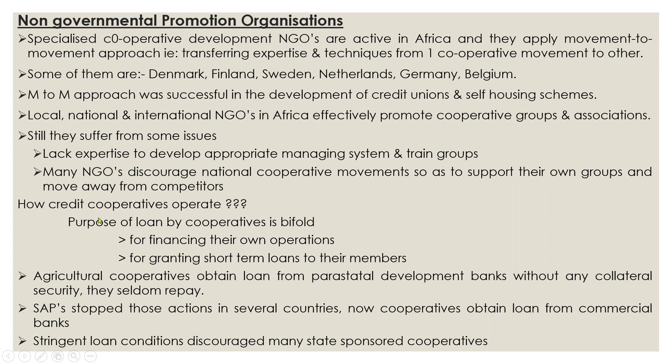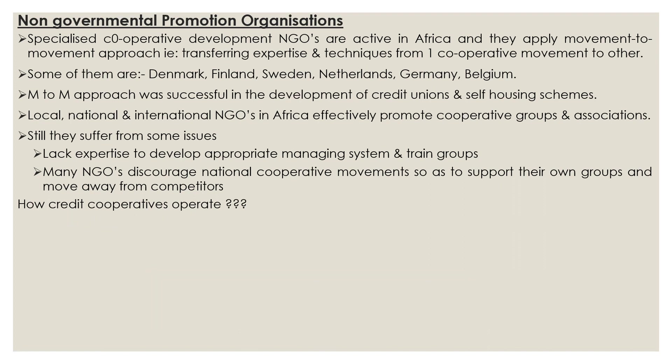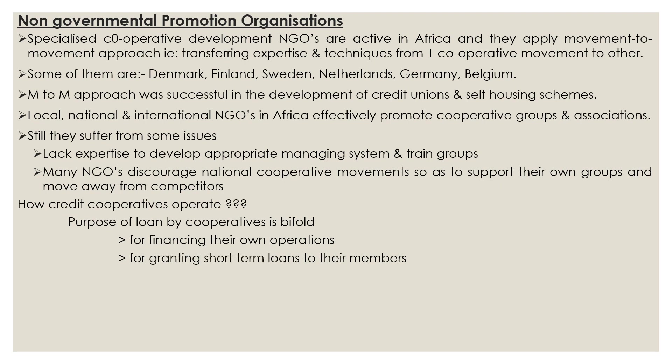Next: how do credit cooperatives operate? There are different types — credit cooperatives, agricultural cooperatives, fisheries cooperatives, self-housing cooperatives, and more. Credit cooperatives operate in a bi-fold system because the purpose of loans is mainly bi-fold: they finance their own operations and at the same time grant short-term loans to their members. These were the two major activities done by cooperative societies.